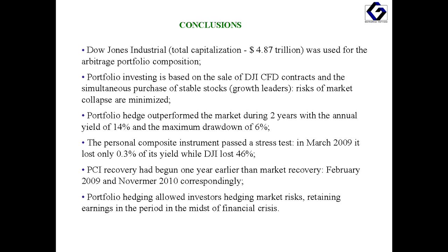Let's sum up. We built a portfolio arbitrage instrument based on quoting a portfolio composed of 5 DJI stocks against the index itself. Investing in the instrument is performed by selling index CFDs and purchasing stock gainers, reducing the risk of a selected market segment crash. Portfolio hedge consistently outpaced the market for two years, with an average yield of 14% and a top drawdown of 6%. The instrument passed a stress test in March 2009: the yield dropped only 0.3% in the midst of crisis while Dow Jones lost 46%. The hedge recovery began six months earlier than the market recovery. Portfolio hedging reduced market systemic risks while maintaining portfolio diversification. As a result, investors keep a profitable portfolio during economic recession and achieve profit above market level at the recovery period.